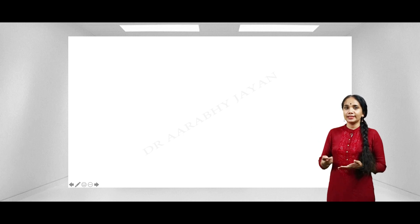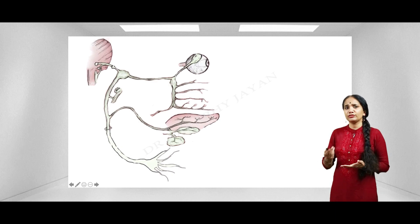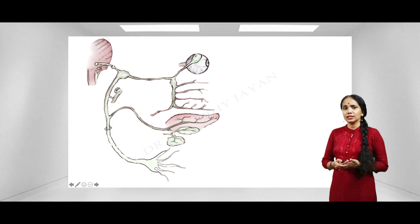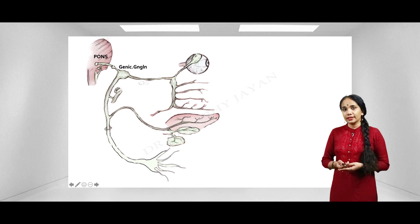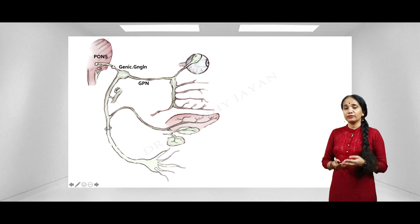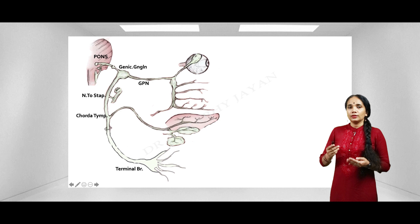Now let's see how to guess the level of a lesion based on clinical presentation. This schematic diagram shows the course of the facial nerve. The nerve starts from the nucleus in the pons, bends at the first genu — the geniculate ganglion — where it gives off the greater petrosal nerve. It then continues along the medial wall to the posterior wall, giving off the nerve to the stapedius, then the chorda tympani, and finally exits via the stylomastoid foramen as terminal branches supplying the face.